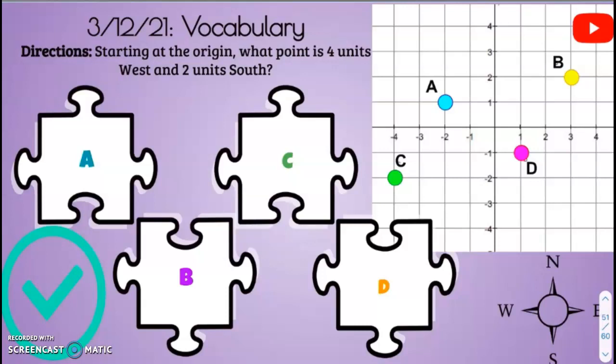Alright, our vocabulary. Starting at the origin—remember, the origin is the center at zero, zero. So starting at the origin, we are going to see what point is four units west.